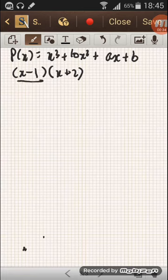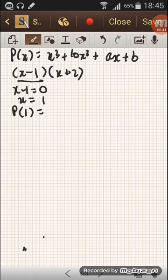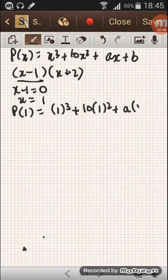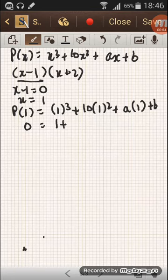First of all, from here x minus 1 equals 0, so x equals 1. If we put P(x), that is P(1), it will be 1 cube plus 10 into 1 square plus a into 1 plus b. We need the value of a and b. It will be actually 0 because P(x) equals 0.